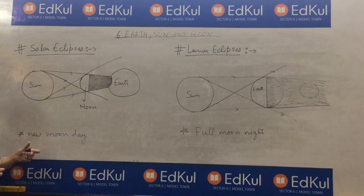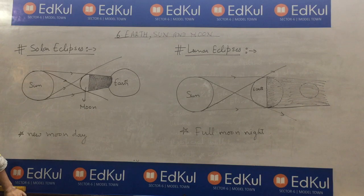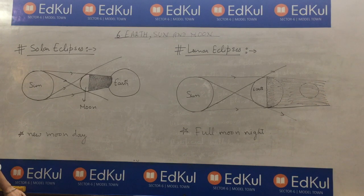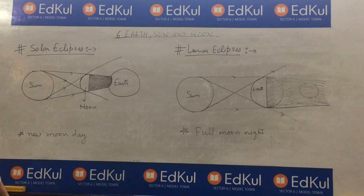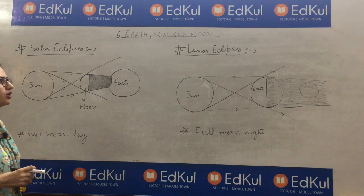This is solar eclipse. Normally, a solar eclipse occurs on a new moon day. When there is a new moon, conditions are right for a solar eclipse.